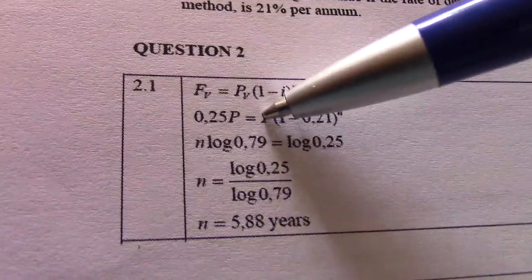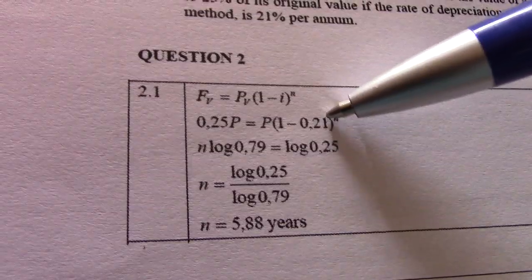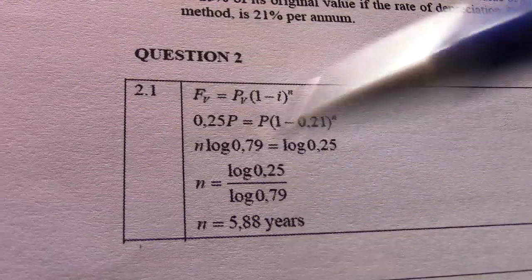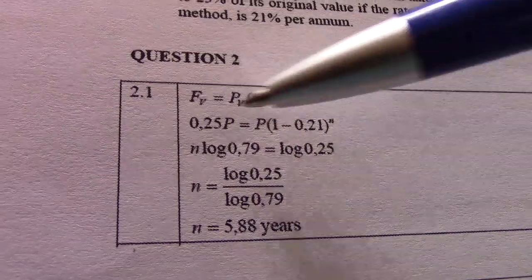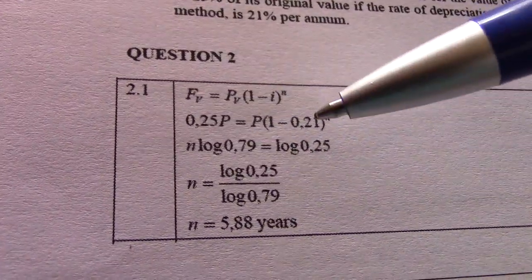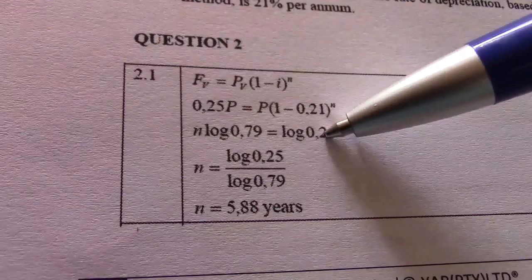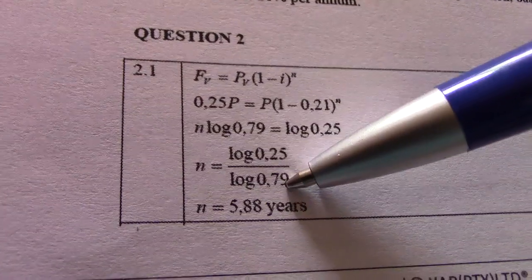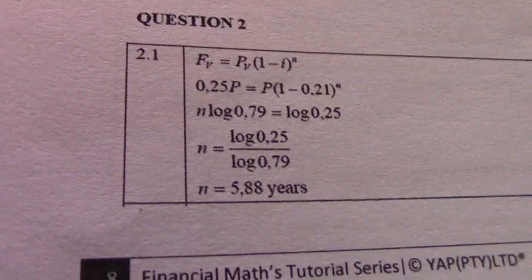If I divide p by p, I have 0.25, there 1 minus 0.21 gives me 0.79. Now introduce log on both sides, so log 0.25 and there n log 0.79. Log 0.25 divided by log 0.79 then gives me 5.88.